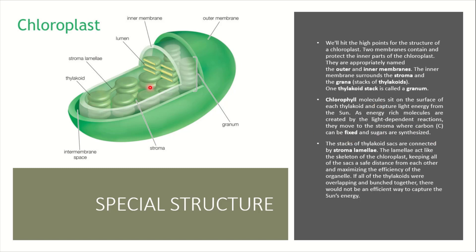Looking at this diagram, these are thylakoids and these are chlorophyll. They capture an efficient amount of light energy from the sun. These energy-rich molecules move into the stroma, where they are fixed with carbon and sugar or food is synthesized. These stacked thylakoids are connected to the stroma, and these stacks of thylakoids form a sac-like body which we call stroma lamella.